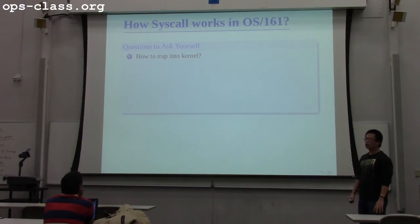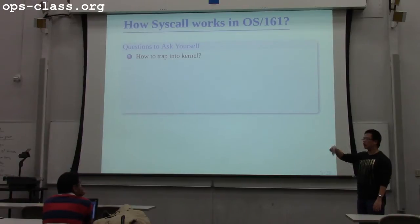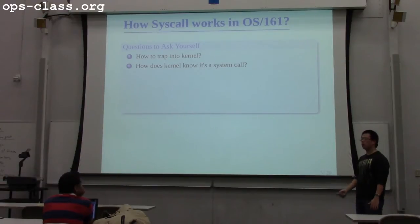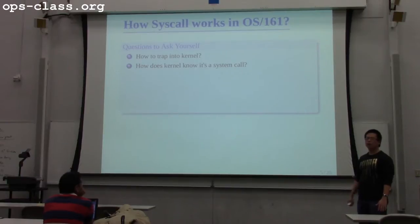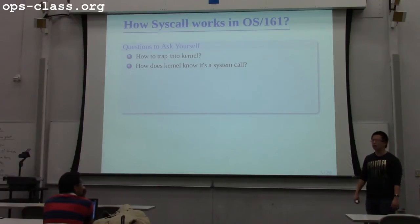First of all, how does the user actually trigger a syscall? How can a user program, through some mechanism, get to a syscall? And how does the kernel know it's a syscall? Because when there is an interrupt, it's not necessarily a syscall — we may have device interrupts, timer interrupts, all kinds of interrupts. So how does the kernel know it's a syscall instead of another interrupt type?